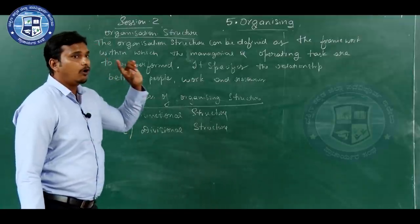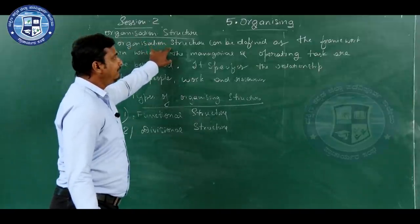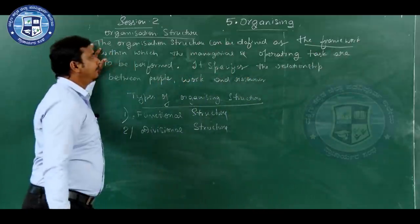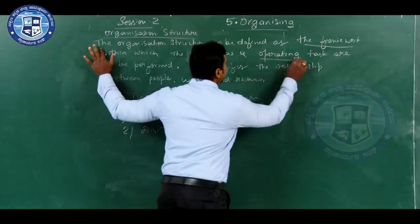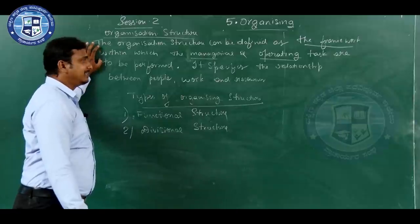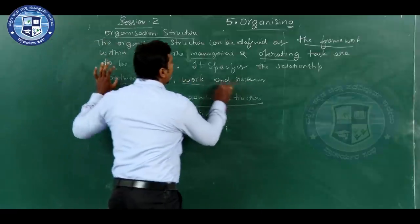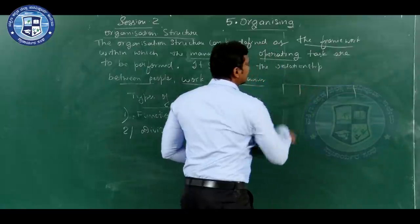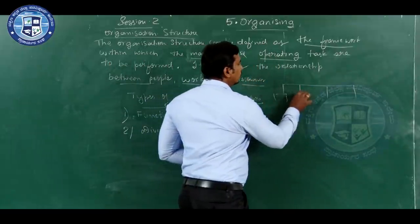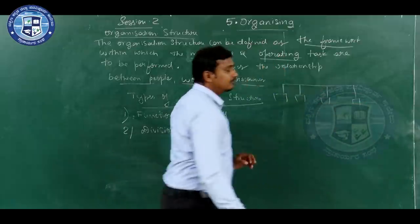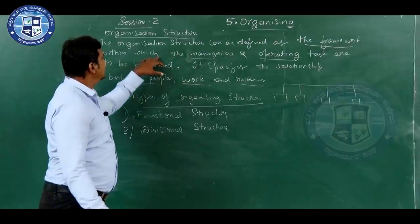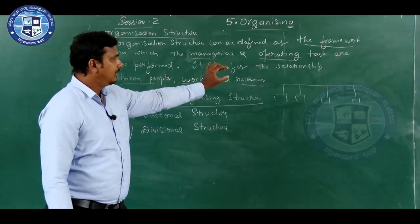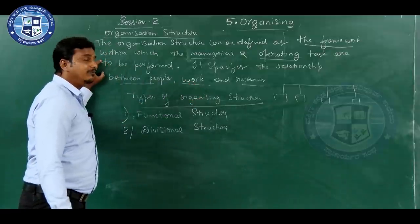What do you mean by organization structure? The organization structure can be defined as the framework within which the managerial and the operating tasks are to be performed. It specifies the relationship between the people, work, and resources. The framework defines who has to work under whom, who has to report to whom, and who has to be given the authority — within which the managerial and operating tasks, the work of a manager and the subordinates, how to perform their activities.